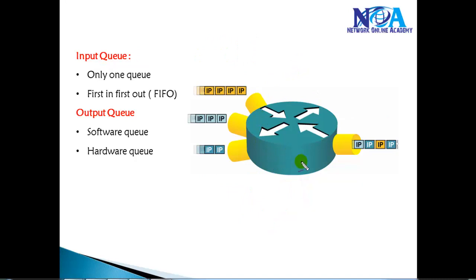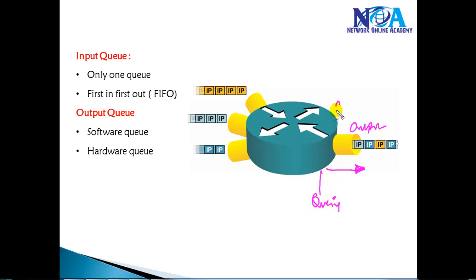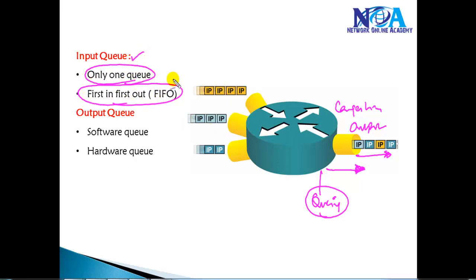The same logic applies to the output queue. If packets arrive at the output interface and the output queue is not congested, the interface simply forwards packets immediately without queuing. Queuing is only required if there is congestion on the output queue, and then packets are stored in local buffer memory before being sent on the output interface. For the input queue, it is always first-in first-out — you have only one queue by default, you cannot manage or change it, and all packets received in order are processed first.